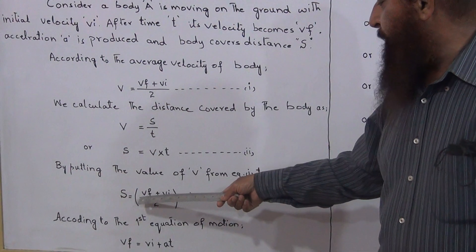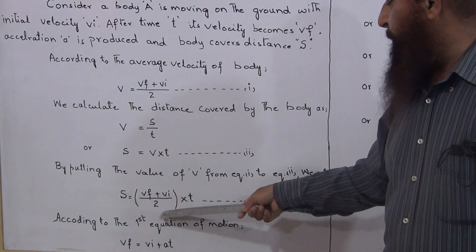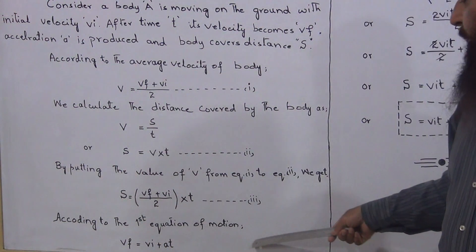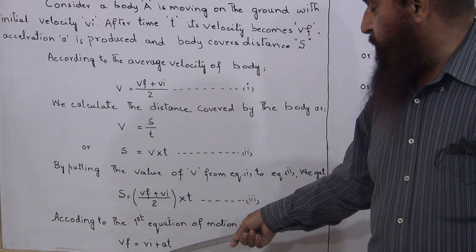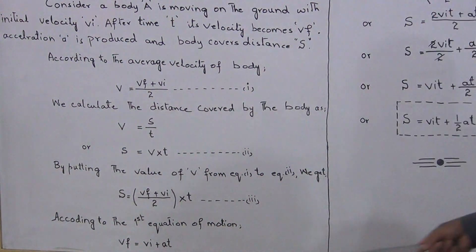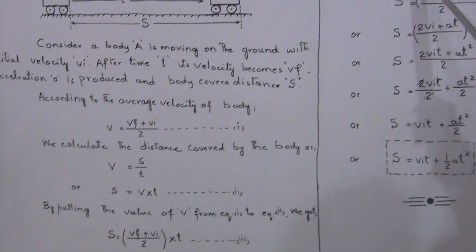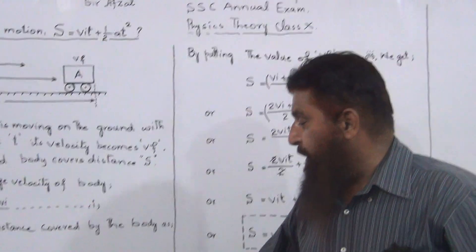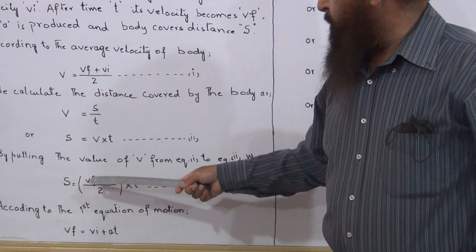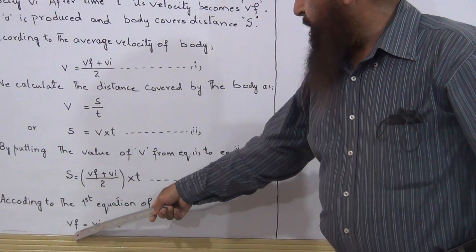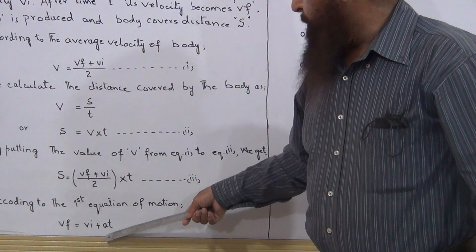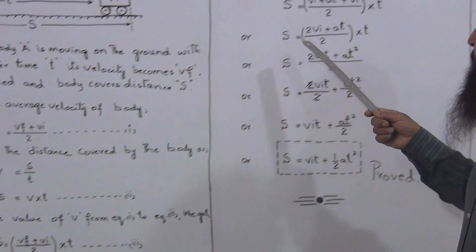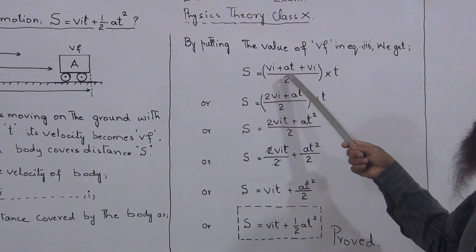According to the first equation of motion, VF = VI + AT. Now by putting the value of VF in equation number 3, we get this one is equation 3. We will put the value of VF from this equation, VF = VI + AT. In this VF we will get instead of VF, VI + AT + VI upon 2, multiplied by T.